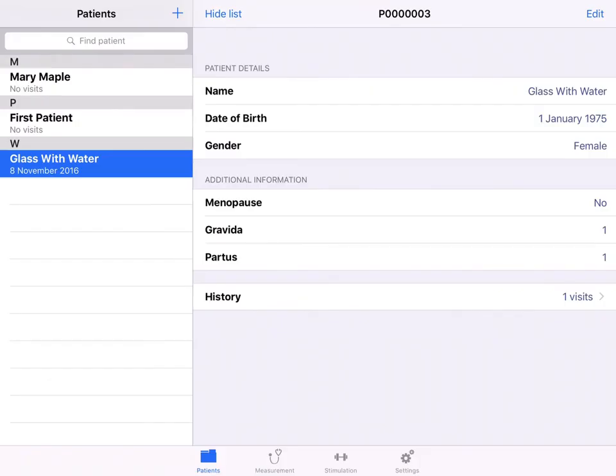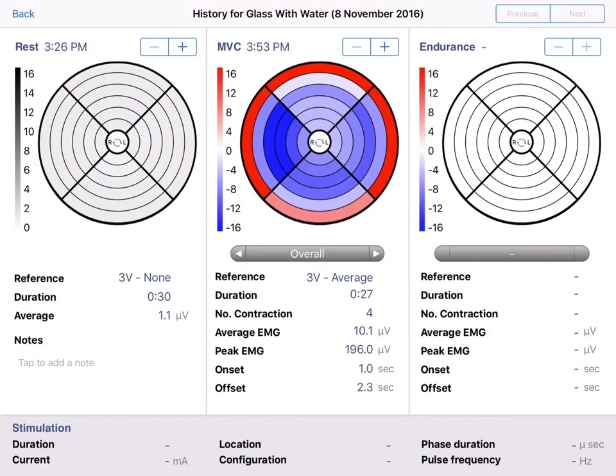Under history you can view the saved measurements. You can flip through previous patient visits with the button on the top right. Use the buttons previous and next to flip through each visit.